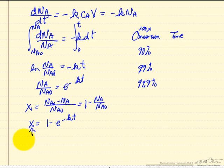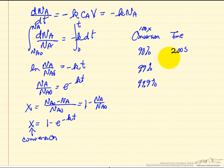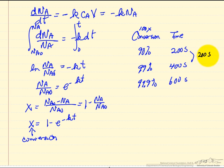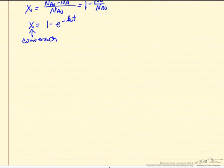We calculate fractional conversion x and multiply by 100 to use percents. Plugging in the numbers for this rate constant, it takes 200 seconds to reach 90% conversion, 400 seconds for 99%, and 600 seconds for 99.9%. So notice: 200 seconds for the first 90%, another 200 seconds for the next 9%, and another 200 seconds for the next 0.9%. It takes longer and longer to convert that last fraction, showing it can be very difficult to reach very high conversions.